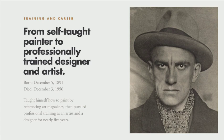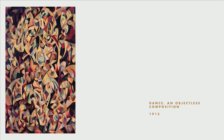He was born in 1891 in Russia, and he died in 1956, also in Russia. He was a painter, a graphic designer, a sculptor, and he was basically self-taught in the beginning. He taught himself how to paint by using art magazines. Then he pursued five years of professional training as a designer and an artist, both at school and through apprenticeships. So this is one of his early works — it's called Dance and Objectless Composition in 1915. It was at this point that he went to school and started his formal education, and at that moment he basically started to change the way he approached art.